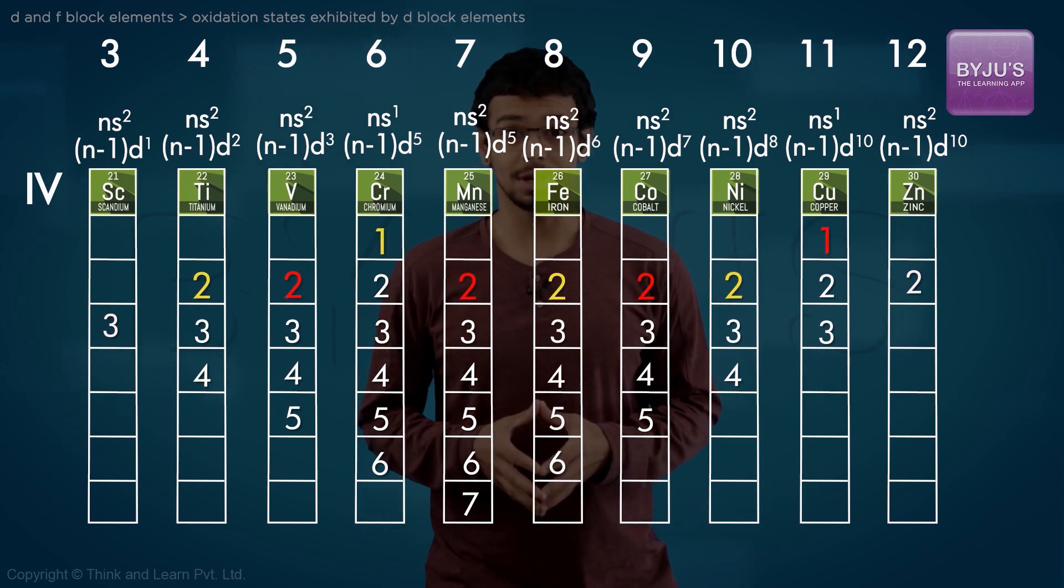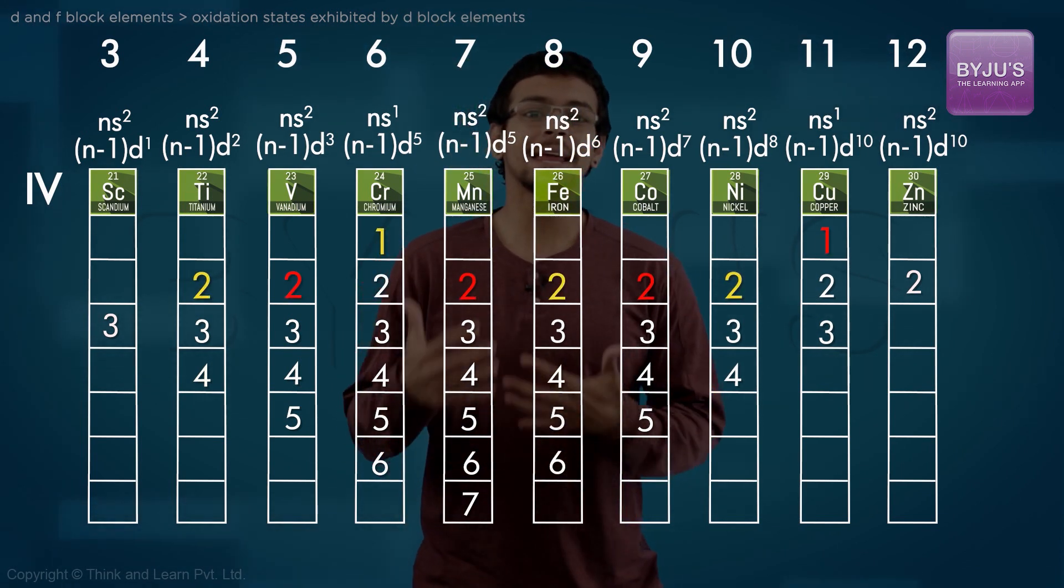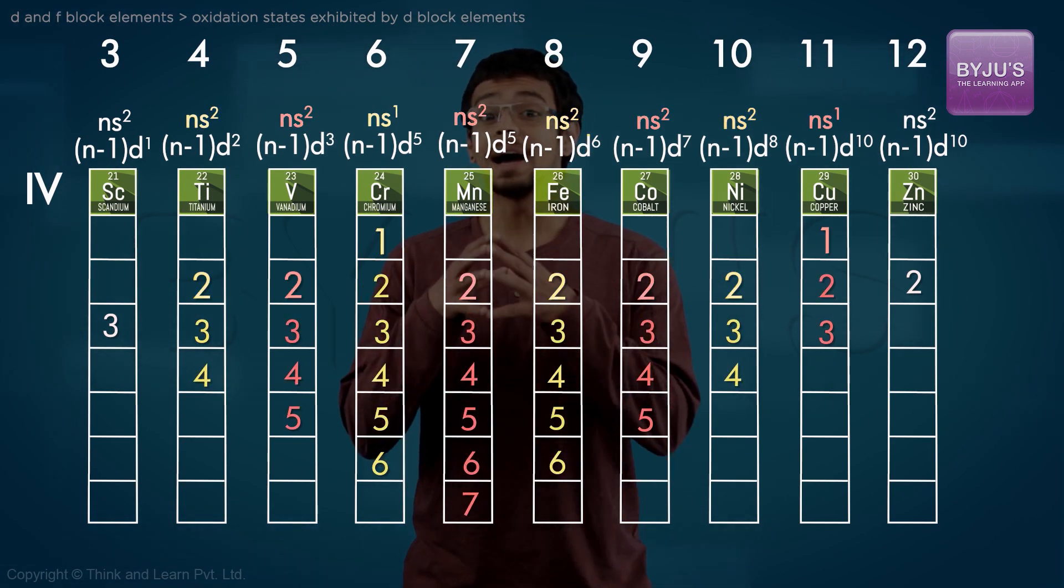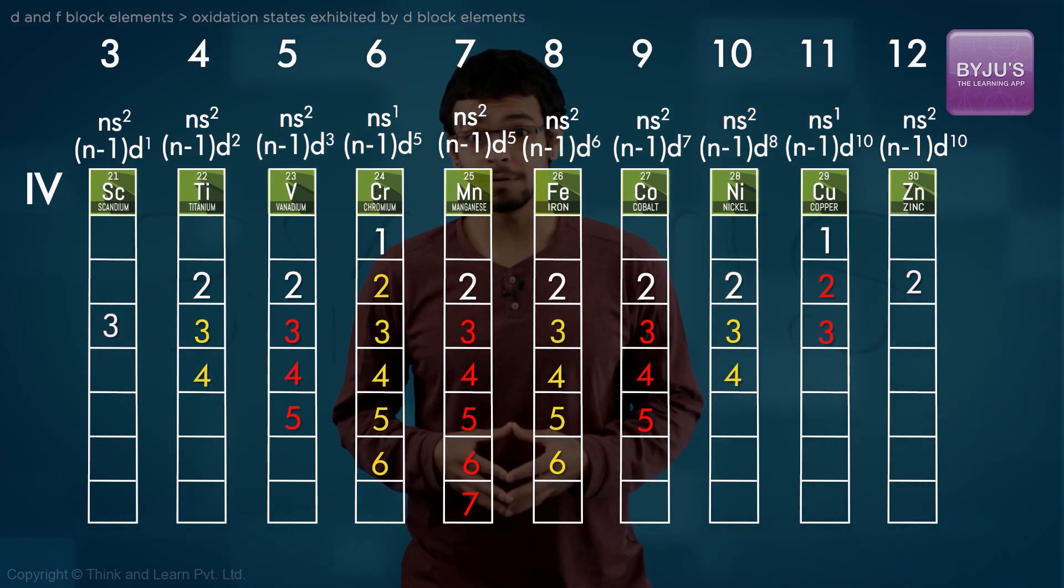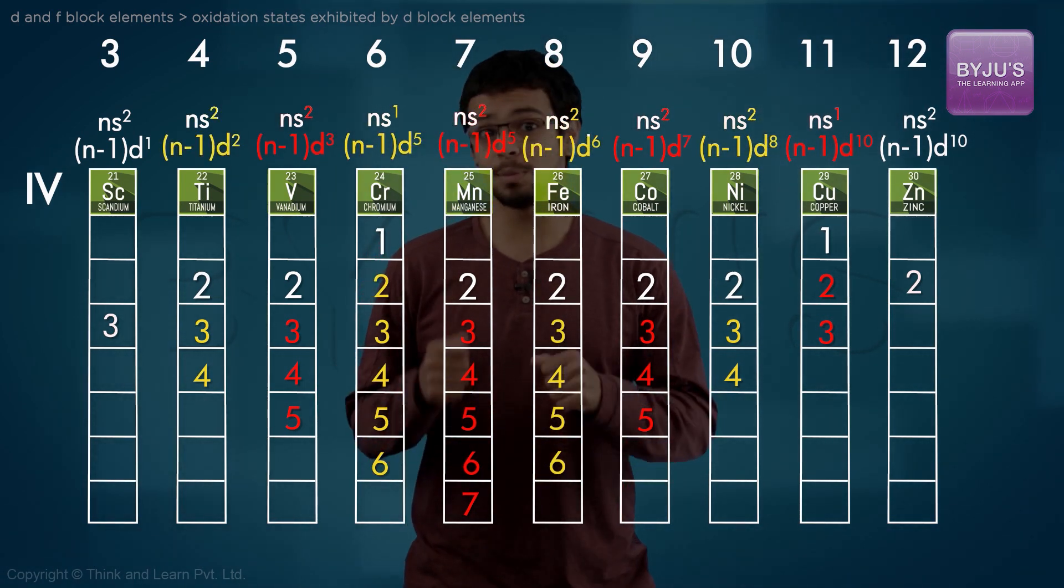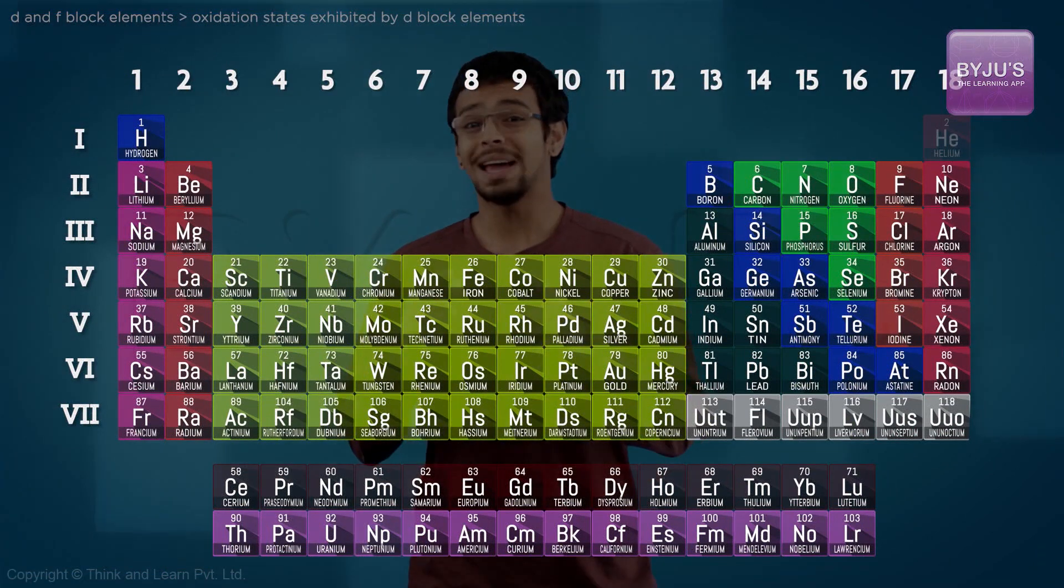The minimum oxidation number or valency is generally the number of ns electrons, except the group 3 elements of course. The higher oxidation states involve removal of or participation of the n-1 d electrons in bond formation.